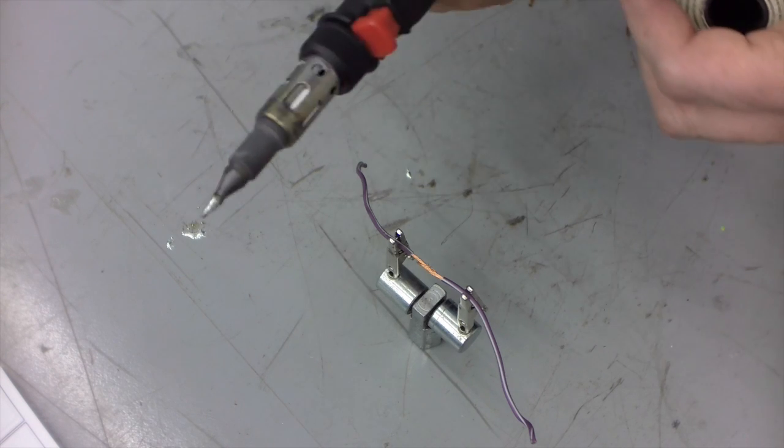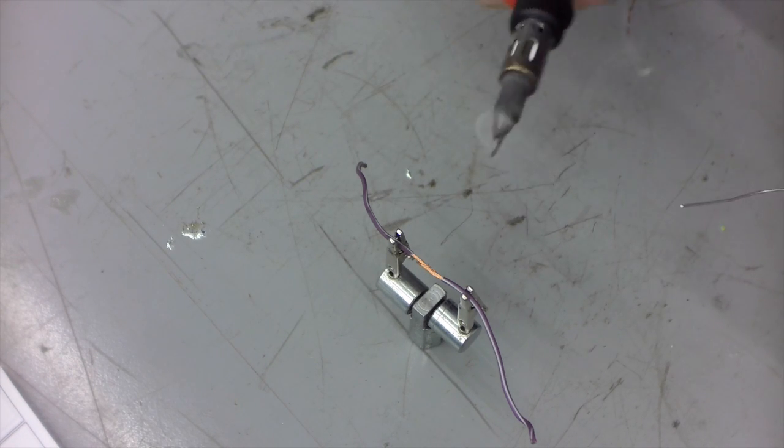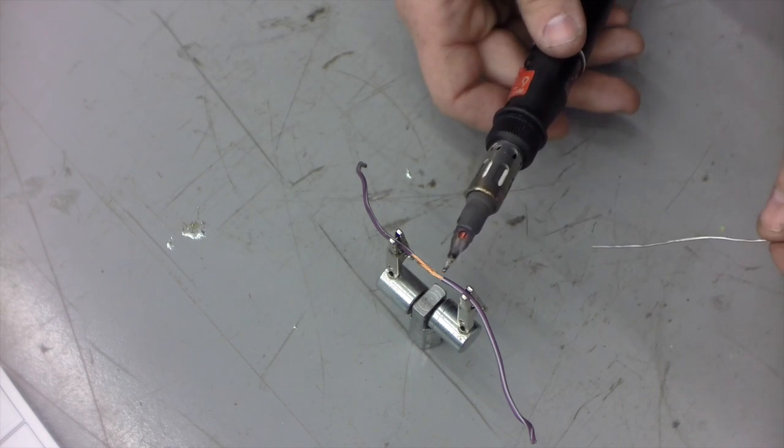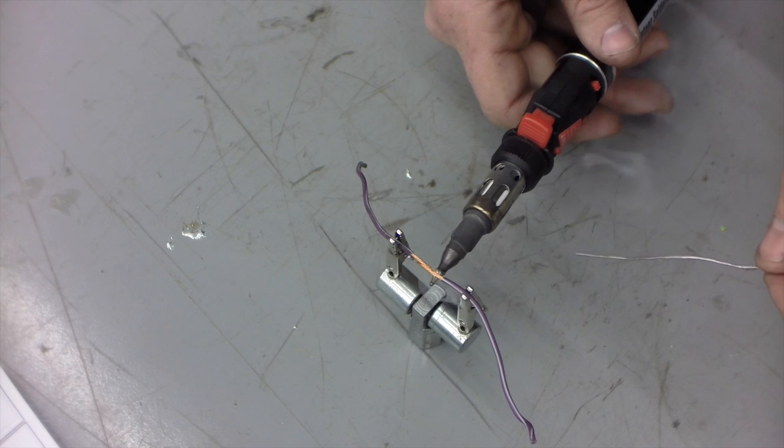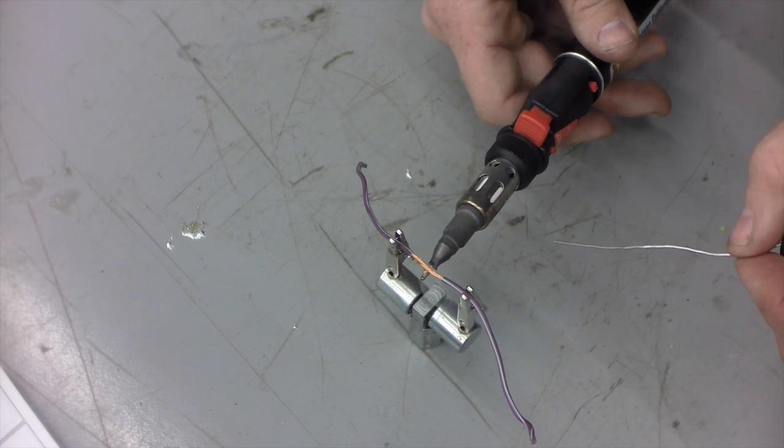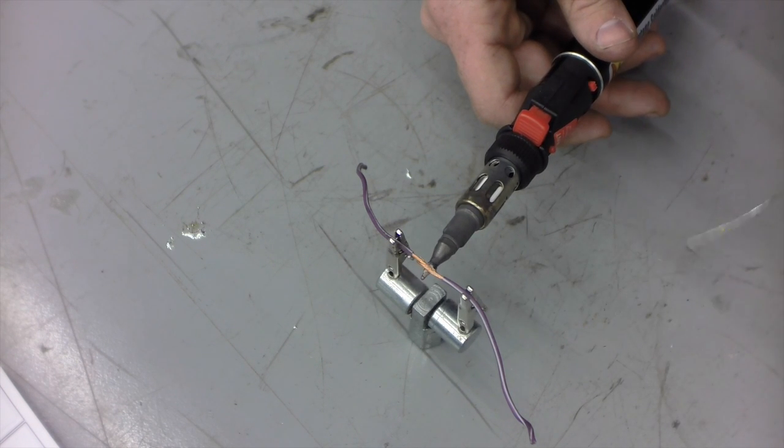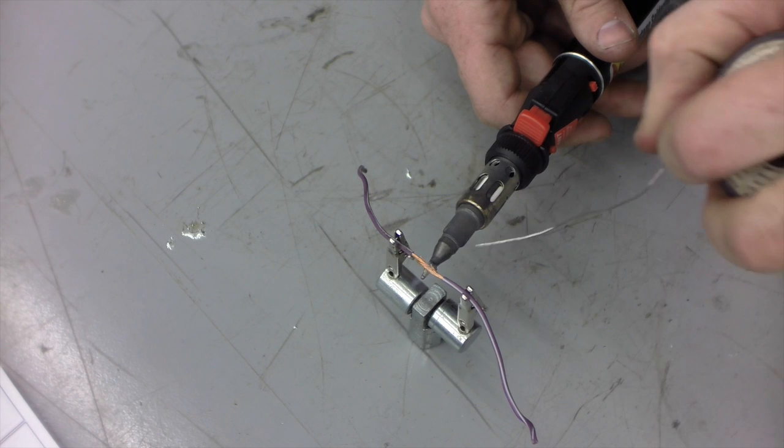Then what I like to do once I've got this nice and coated, take the iron—and since this one's got a little exhaust fan on I got to make sure this is pointing in a safe direction—I will take the tip of the iron and touch it to the wire. What I need to do is get a little bit of solder to pour from the tinned tip into the wire.